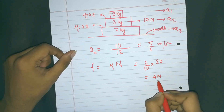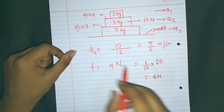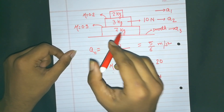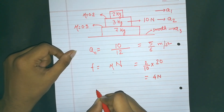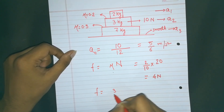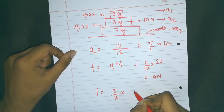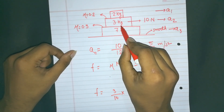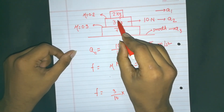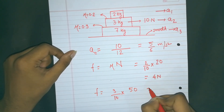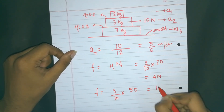Between 3kg and 7kg, the maximum static friction is: 0.3 × normal reaction between these two surfaces, which is (3 + 2) × g = 5 × 10 = 50. So 0.3 × 50 = 15 newtons.